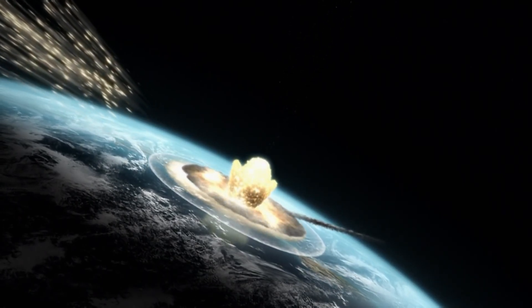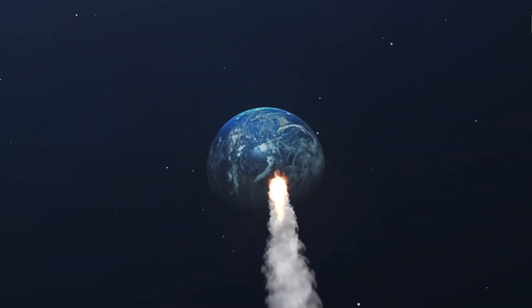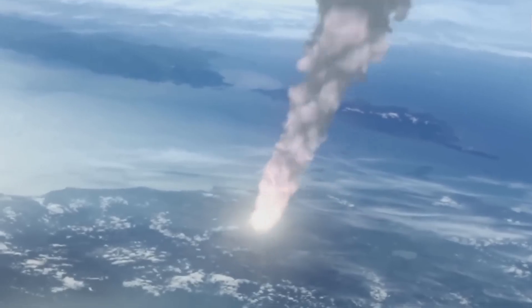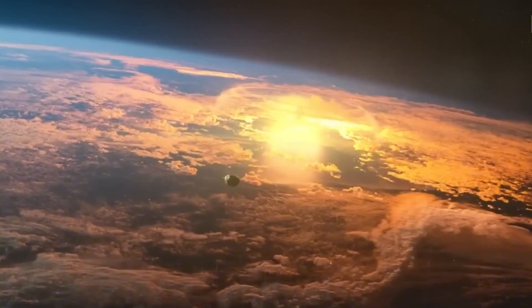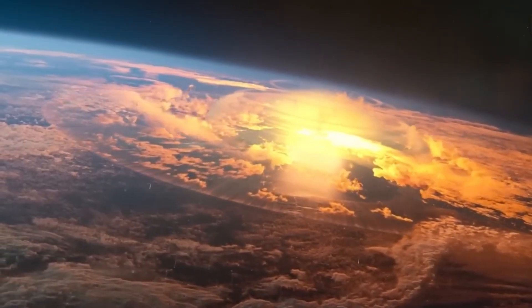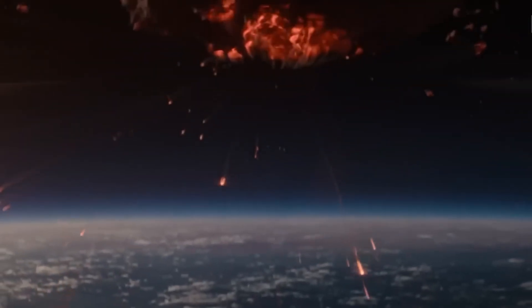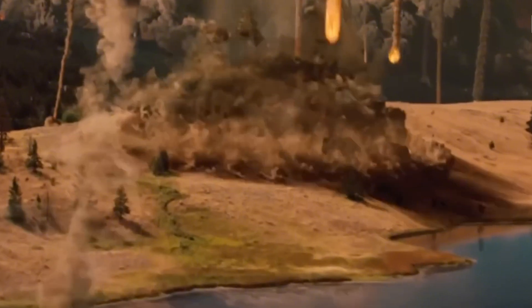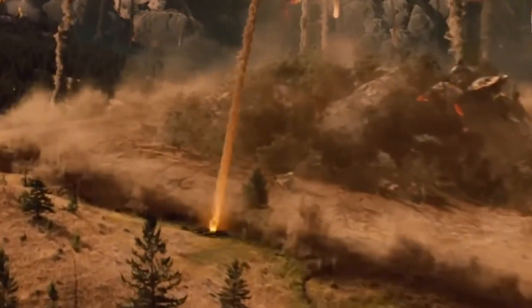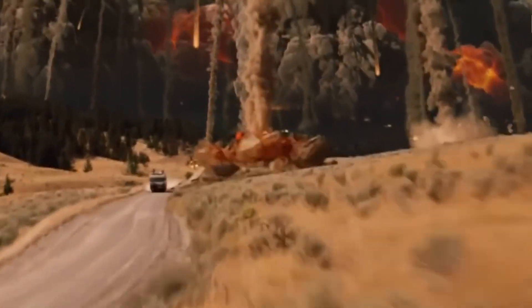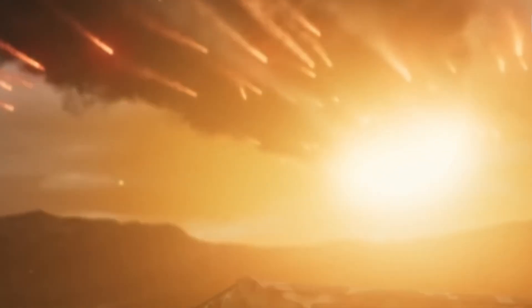Now imagine something even larger, an asteroid the size of Mount Everest, hurtling toward Earth. The impact would release more energy than all the nuclear bombs on the planet combined, creating a crater hundreds of miles wide, and triggering earthquakes, volcanic eruptions, and potentially even altering Earth's orbit. And here's the kicker. There are thousands of these near-Earth objects out there, and while scientists are tracking most of the big ones, smaller ones could still sneak up on us.